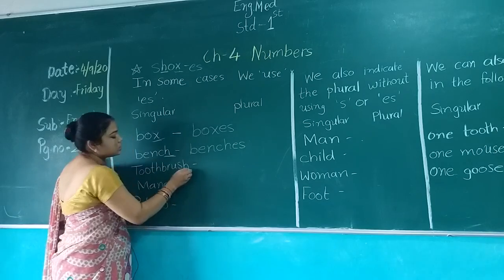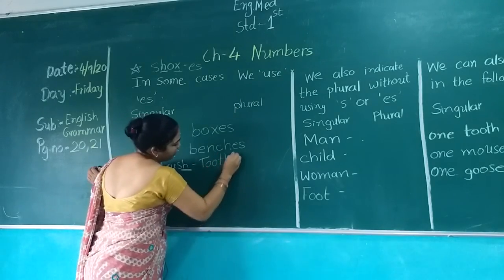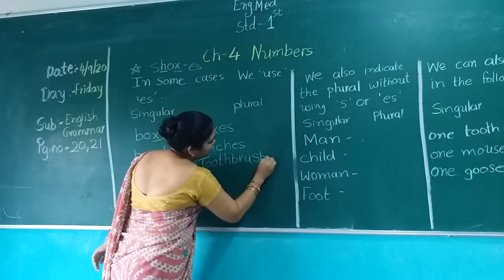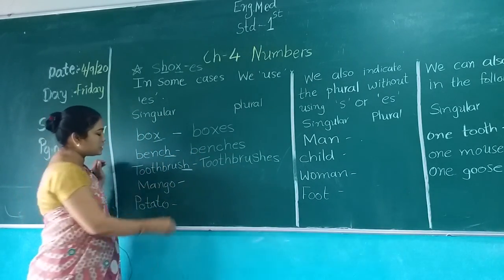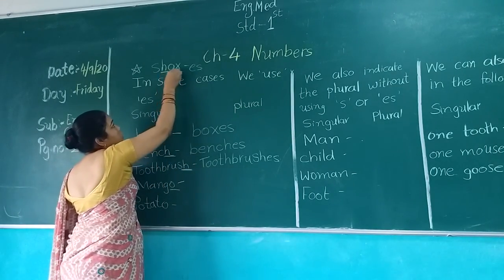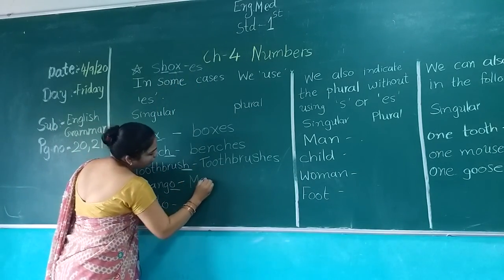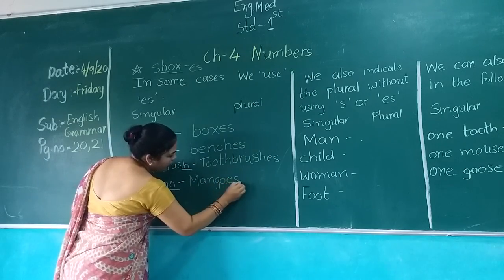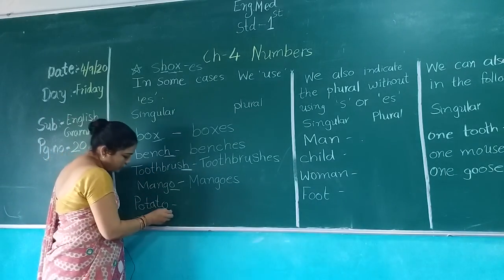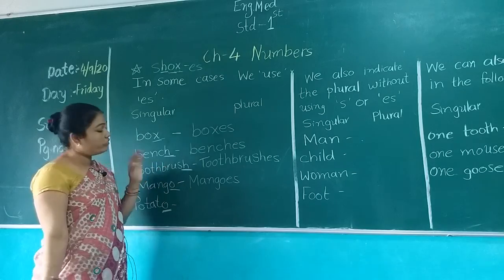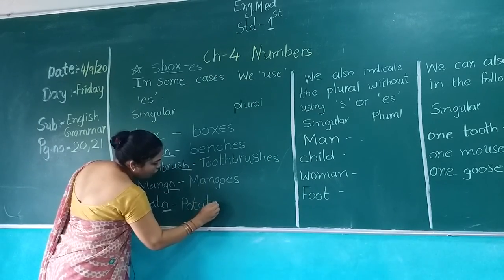Toothbrush. Last letter is H. So what we have to add? Toothbrushes. M-A-N-G-O, Mango. Last letter is O. If last letter is O, we have to add ES. M-A-N-G-O-E-S, Mangoes. P-O-T-A-T-O-E-S, Potatoes.